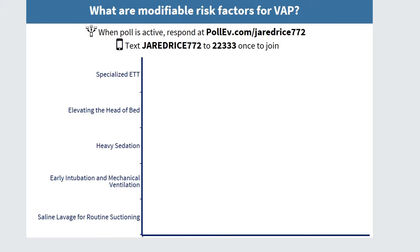Heavy sedation is not recommended. You need to sedate the patient enough to keep them comfortable, but you should do daily sedation vacations to check for readiness to extubate, decreasing the duration of mechanical ventilation. Early intubation should be avoided; attempting alternative means like non-invasive ventilation can prevent intubation and remove the risk of VAP altogether. Routine saline lavages for suctioning should not be done, as lavaging the ET tube can wash bacteria down the tube and into the lungs. However, using saline to clean the suction catheter after each suctioning is recommended.